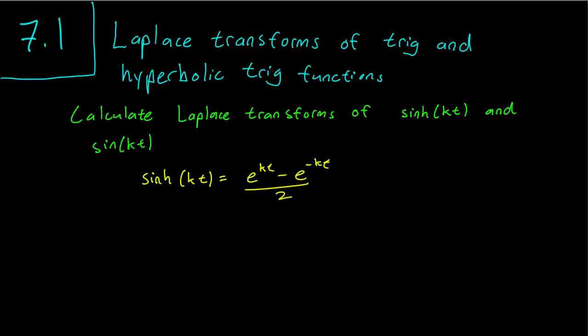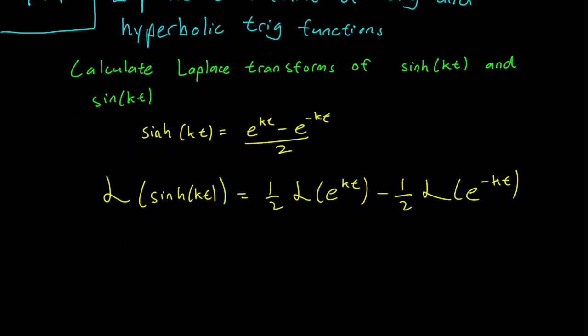The point here is to use the linearity of the Laplace transform. So if we take the Laplace transform of sinh of kt, we know that we have one-half of Laplace transform of e^kt minus one-half the Laplace transform of e^(-kt). And we already know how to take Laplace transform of exponentials, so this will be really straightforward.